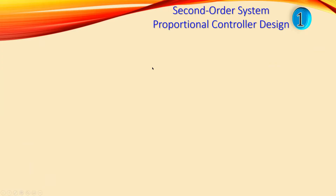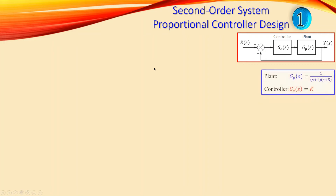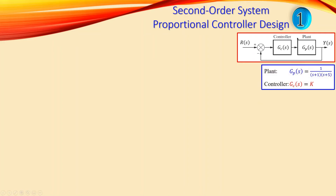We have a second order system with a proportional controller design. The controller is in cascade with the plant in a unity gain feedback configuration. The plant is given by 1 over (s+1)(s+4), which is a second order system with two poles in the left half plane — already a stable system. The controller is simply the gain k.